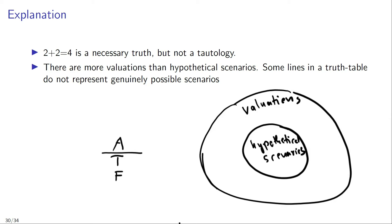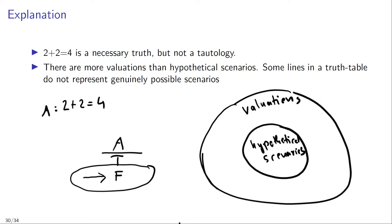For example, we know that the capital letter A represents the sentence '2 plus 2 equals 4,' and we know that this sentence is a necessary truth, and therefore true in all hypothetical scenarios. But we also saw that the truth table for sentence A contains a row in which this sentence is evaluated as false. And that means that this row does not correspond to a genuinely possible hypothetical scenario — even though this row represents a possible valuation, it does not represent a genuinely possible hypothetical scenario.